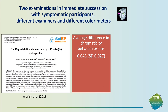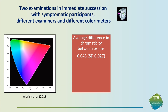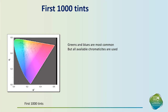The extraordinary thing is that if you give a patient who has symptoms that remit with the appropriate colour, that colour is very specific. We demonstrated this in a study where two examiners examined a patient, one after the other, with different colourimeters, and yet the average difference in chromaticity from one setting to the next was 0.043, which is about the size of a small line in the CIE-UCS space. This system has been in clinical use for some 20 years in Britain; the first thousand tints show greens and blues are the most common, but all available chromaticities are sometimes used.